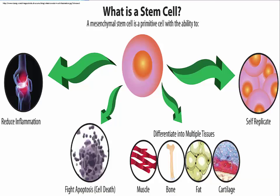Stem cells are unspecialized cells in the body that have the ability to differentiate into other cells. Stem cells are divided into two types: embryonic and adult. An embryonic stem cell comes from a four to five day old embryo and has the ability to develop into every type of tissue found in an adult human. Adult stem cells are found in small numbers in many organs and tissues in specific areas called a stem cell niche, and are more limited in their potential to differentiate. For example, stem cells from the liver may only develop into more liver cells. The stem cell's role is to maintain and repair tissues in which they are found.